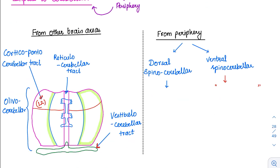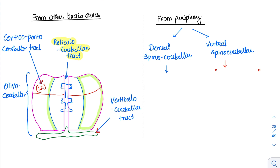The cerebellum receives inputs via various different tracts. The one going to the vermis is called the reticulocerebellar tract. The one going to the flocculonodular lobe — which is very important for balance and hearing — is associated with the vestibular apparatus of the ear, maintaining balance with respect to head position. That tract is called the vestibulocerebellar tract, going specifically to the flocculonodular lobe. One more tract called the olivocerebellar tract goes to all regions: the lateral zone, intermediate zone, and vermis. The most important tract is the corticopontocerebellar tract, which brings the blueprint from the cortex to the cerebellum via the pontine nuclei.